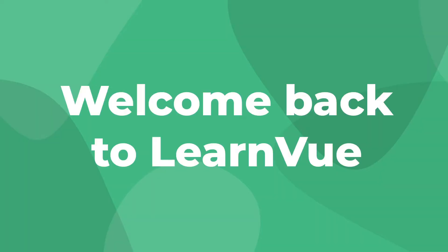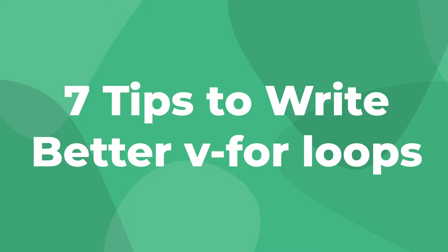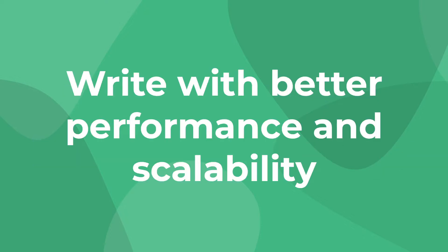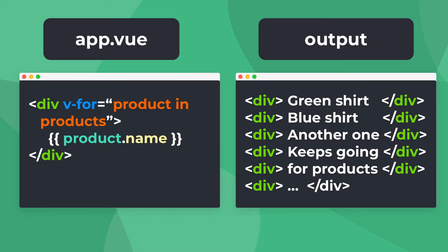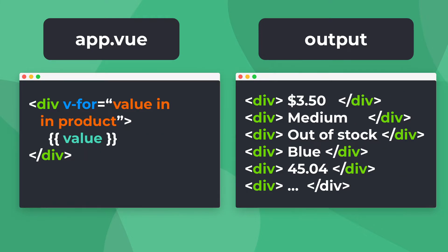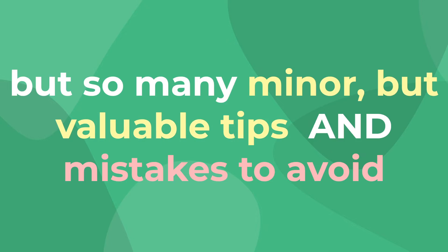Hey Vue devs, welcome back to LearnVue. In today's video, we're going to be taking a look at 7 ways to improve your Vue for loops and write more efficient, concise, and readable code. If you've done any work in Vue, then you know how essential Vue for loops are to creating your template code. They allow you to write for loops in your template code, which is amazing for things like rendering arrays or lists, and even iterating through an object's properties. Although they're simple to use, there are so many ways to make sure you're following Vue's best practices.